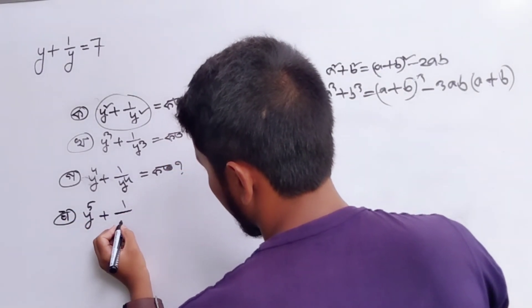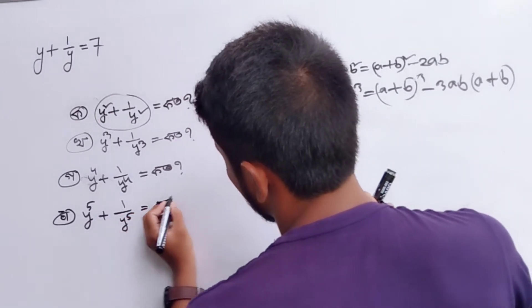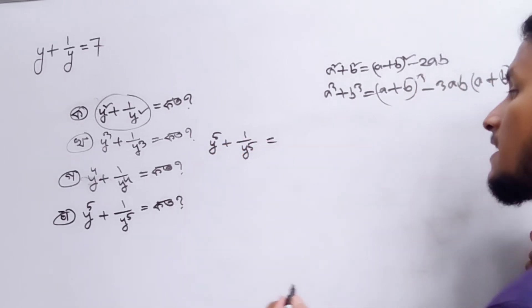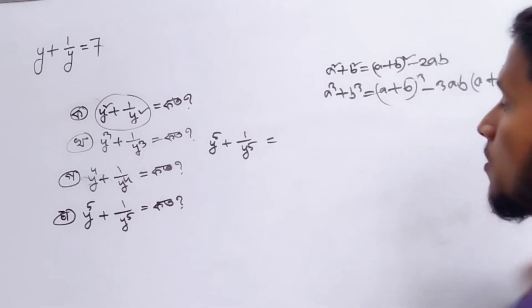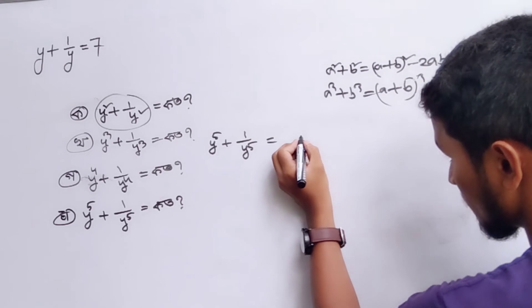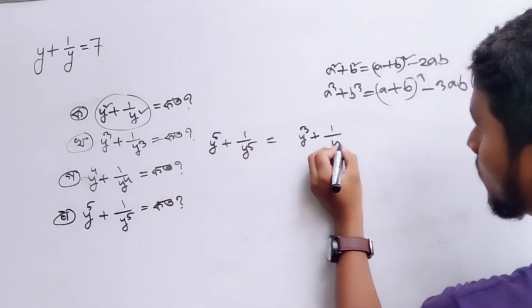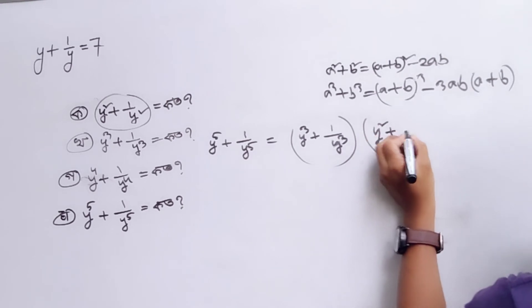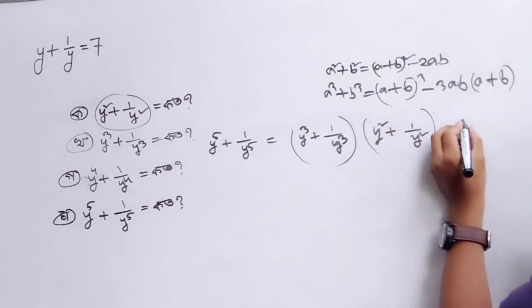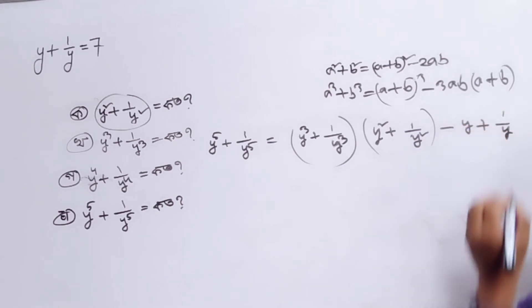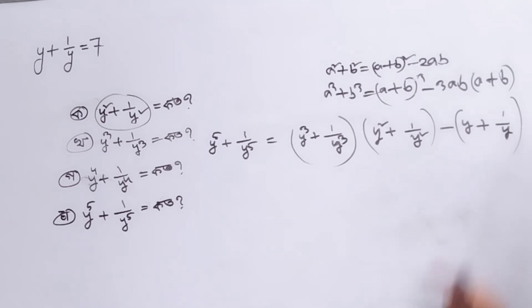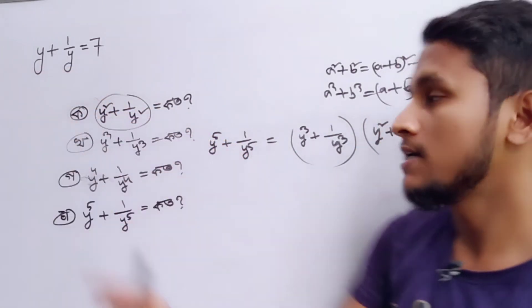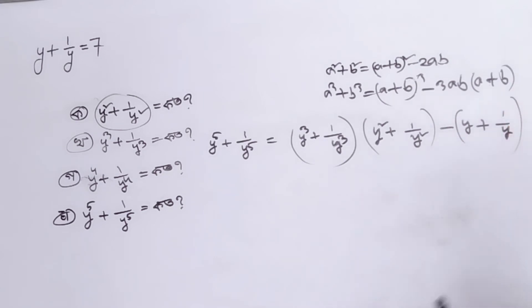y to the power 5 plus 1 by y to the power 5. Basically, we are going to write about y³ plus 1 by y³ into y² plus 1 by y.